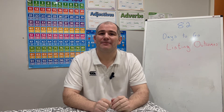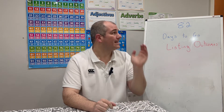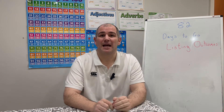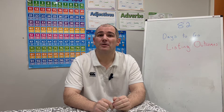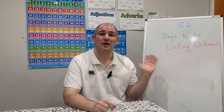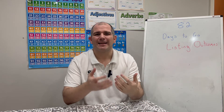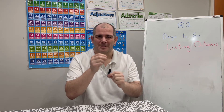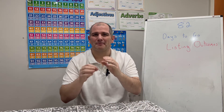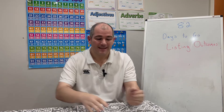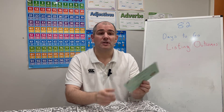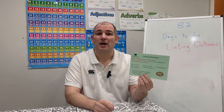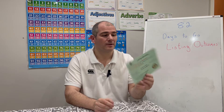Hi everyone, welcome to today's GCSE Foundation video. There are 82 days to go until the GCSE Maths exam, and today we're going to be focusing on the topic of listing outcomes. I really like this topic — I like being able to work through systematically and write down all the outcomes that can happen. The revision card number 72 on listing outcomes is really useful.